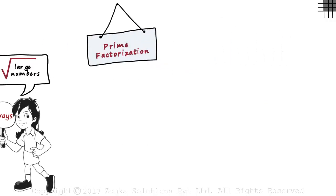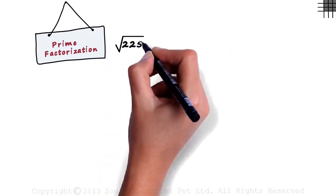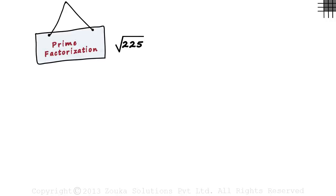So we want to find the square root of 225. Our aim is very simple. We have to reduce this number to its prime factors. That's all. How do we do it? Before we go ahead,